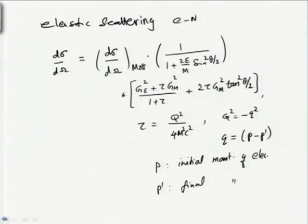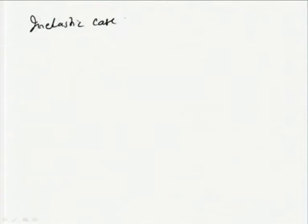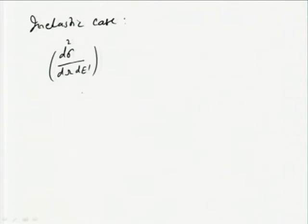The earlier formula is called the Rosenbluth formula, where G_E and G_M are the electric and magnetic form factors which depend on Q². For the inelastic case, we consider an expression similar to the Rosenbluth formula and write it as d²σ/dΩ dE'. One difference compared to the elastic case is that we are also differentiating with respect to the final electron energy. In the elastic case, the final energy of the electron is fixed.